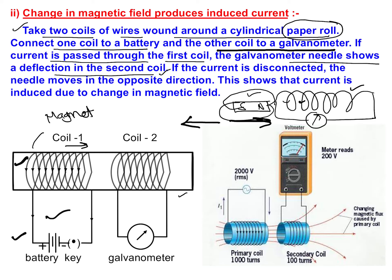We will notice that there will be a deflection of current. Suppose our pointer is initially at center — it will have a deflection in one direction.